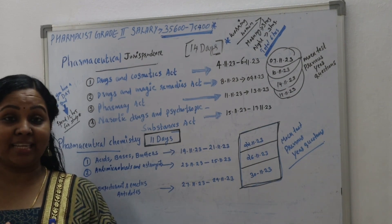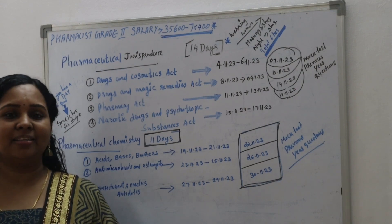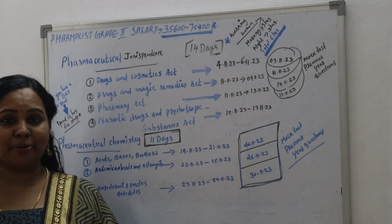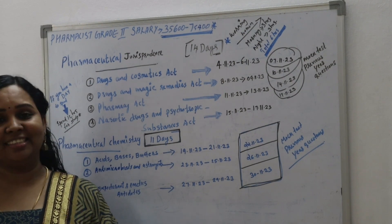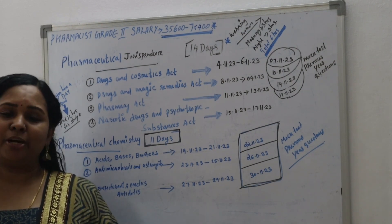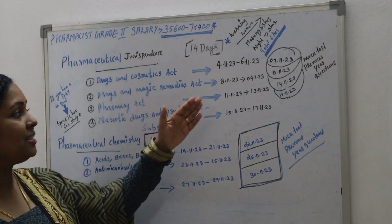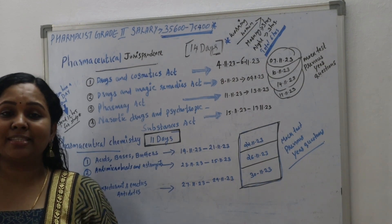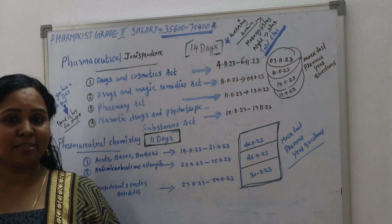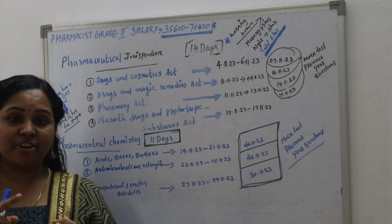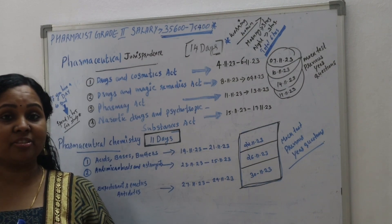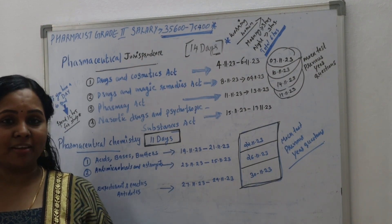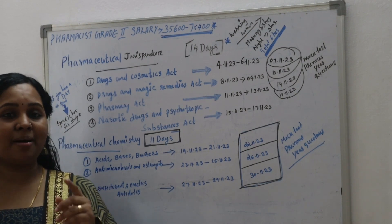We are going to cover Pharmaceutical Jurisprudence and Pharmaceutical Chemistry 1 through to the end of our timetable. There are 4 chapters of Pharmaceutical Jurisprudence you will learn for the Pharmacist Grade 2 exam: the Drugs and Cosmetics Act, the Drugs and Magic Remedies Act, the Pharmacy Act, and the Narcotic Drugs and Psychotropic Substances Act.